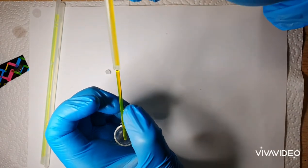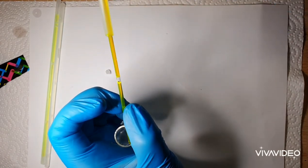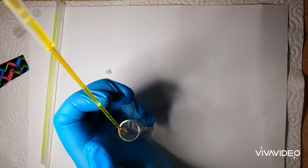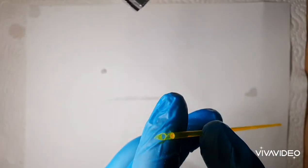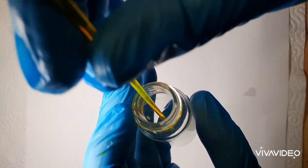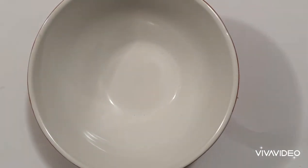A glow stick works because it has two separate chambers. It has an outer plastic container and an inner thin glass tube. In this example, the inner glass tube contains the colored dye as well as the diphenyl oxalate.